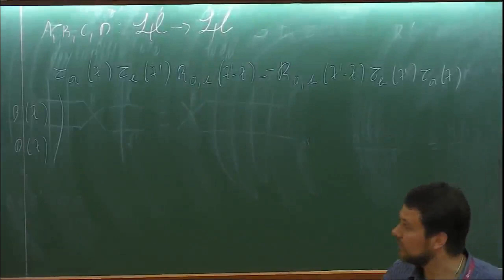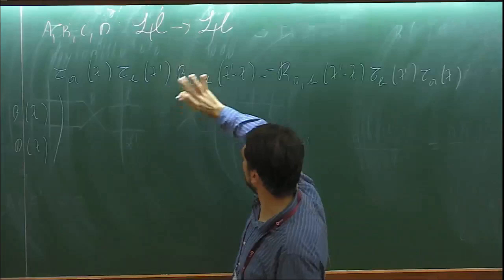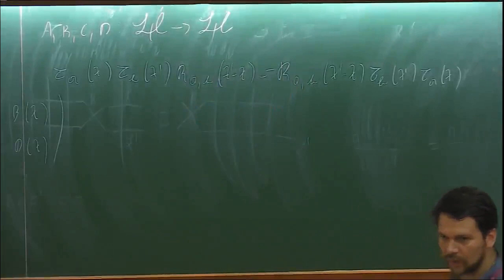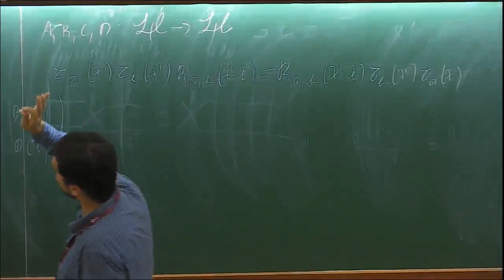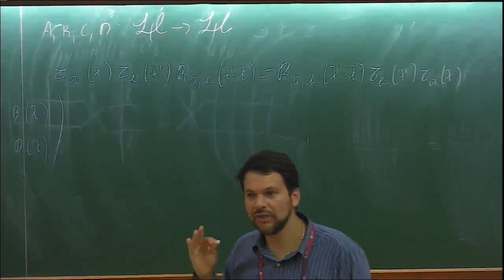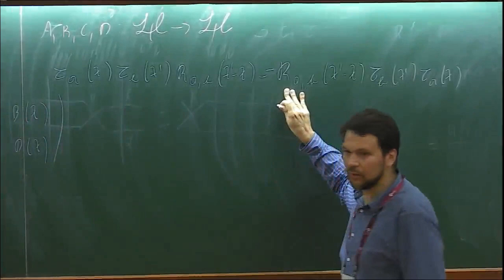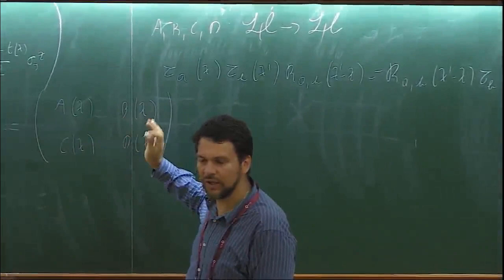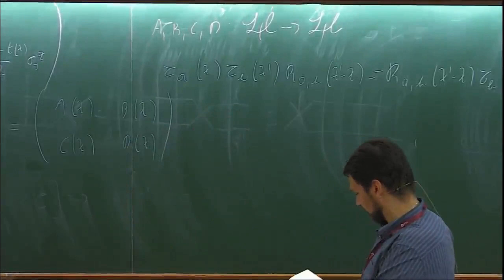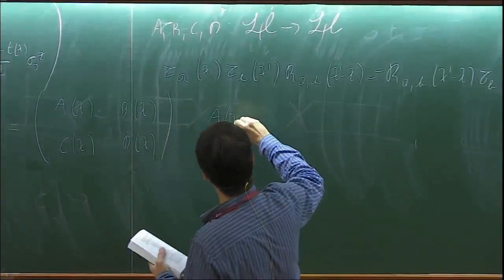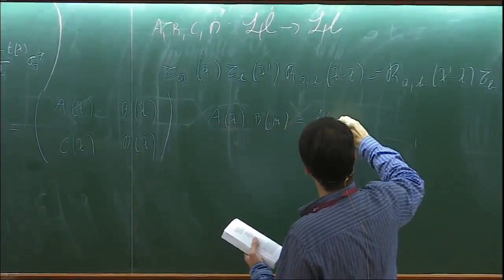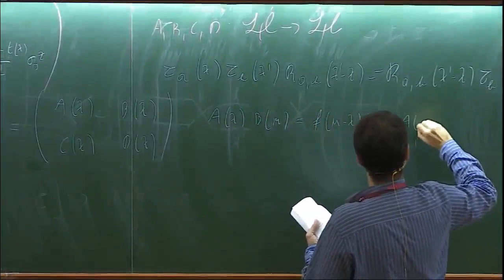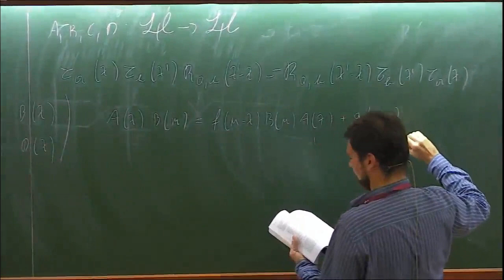The Yang-Baxter equation gives a generalized algebra. For instance, one relation tells you what happens when you multiply A(λ) by B(μ): A(λ) B(μ) = F(μ - λ) B(μ) A(λ) + G(λ - μ) B(λ) A(μ). These are generalized commutation relations given by the R matrix elements. You trade the knowledge of what these operators look like for knowledge of their action — you have a bunch of such relations.